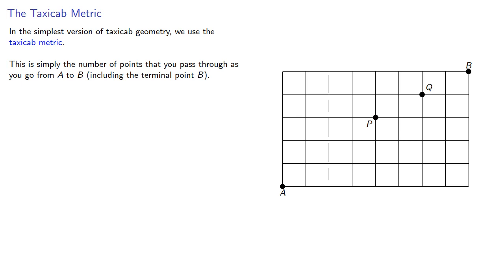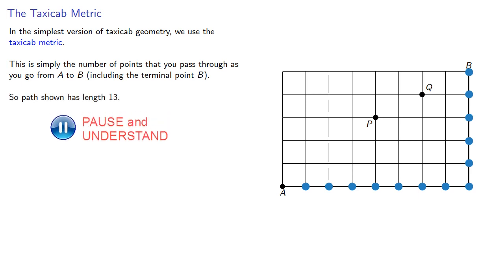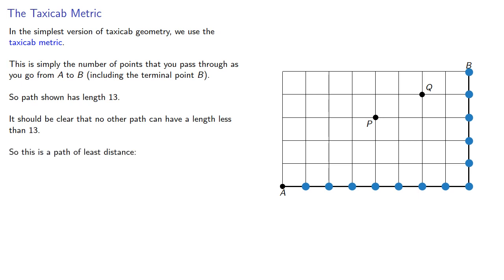So if I have a path like this, we pass through a total of 13 points, and so the path shown has length 13. It should be clear that no other path can have a length less than 13, so this is a path of least distance.